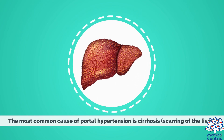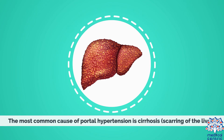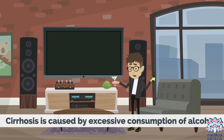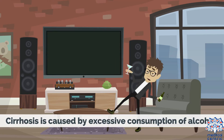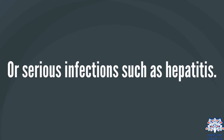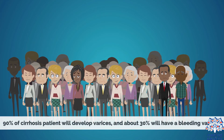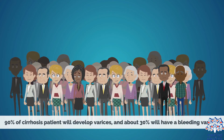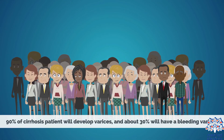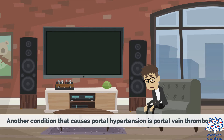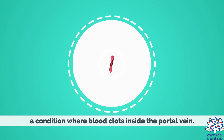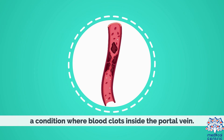The most common cause of portal hypertension is cirrhosis, or scarring of the liver. Cirrhosis is caused by excessive consumption of alcohol or serious infections such as hepatitis. 90% of cirrhosis patients will develop varices, and about 30% will have bleeding varices. Another condition that causes portal hypertension is portal vein thrombosis, a condition where blood clots inside the portal vein.